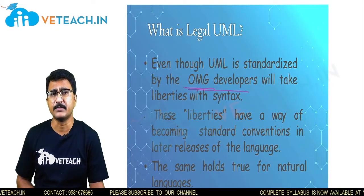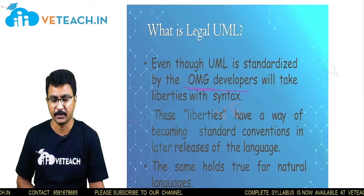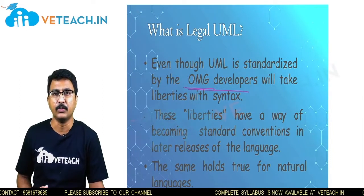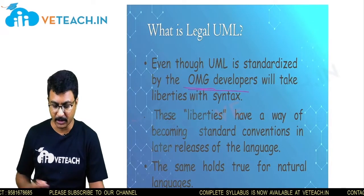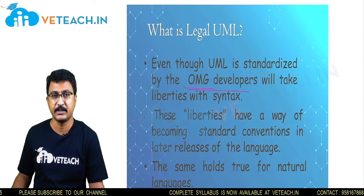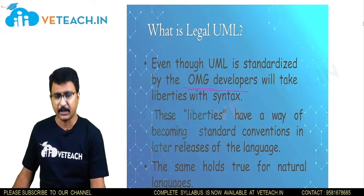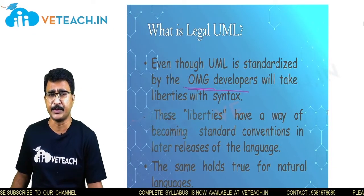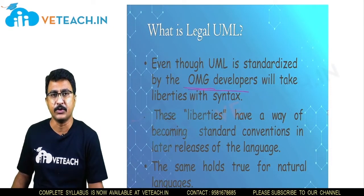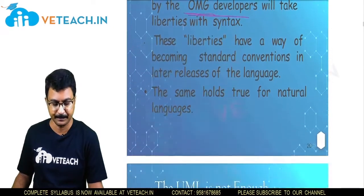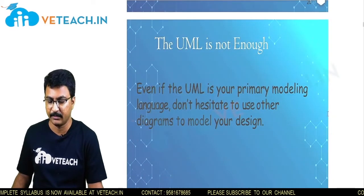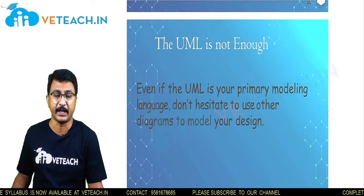But what happens if someone comes up with a new one? OMG tends to give you that liberty to denote such notations, such conventions in your programming language — they are accepted. What about the natural language representation in UML? The same thing holds. UML gives you that liberty, which is why it is called a legal UML — because it is accepted by OMG.